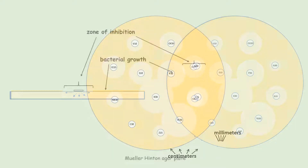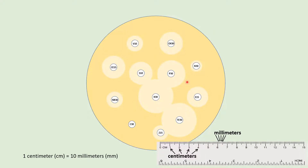We measure these zones of inhibition using a ruler. The ruler has inches on one side and centimeters on the other — we use the centimeter side. We need to record results in millimeters, so remember that one centimeter equals 10 millimeters. The ruler has increments from 0 to 15 centimeters, and between any two centimeter marks there are 10 smaller divisions, each representing 1 millimeter. So whatever number you have in centimeters, multiply by 10 to get millimeters.